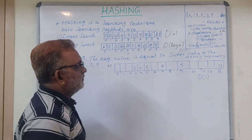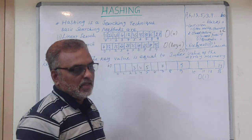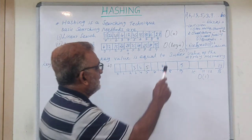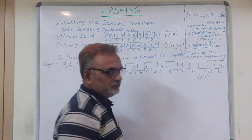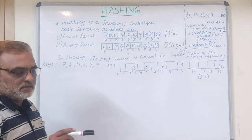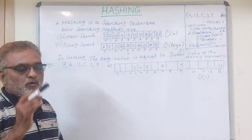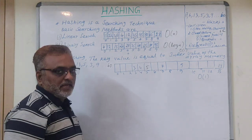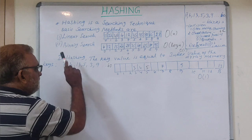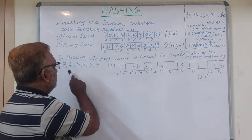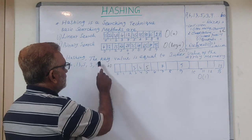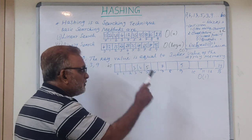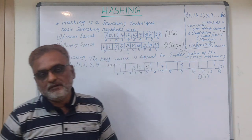The time is considerably reduced and the speed of searching is increased. But our ultimate aim is to achieve O(1) — meaning we want to retrieve data in just one seek. That can be done with the help of hashing. The technique is based on the key value being equal to the index value of the array memory.